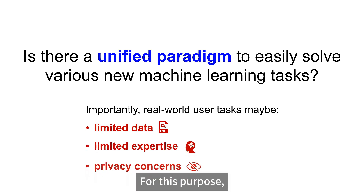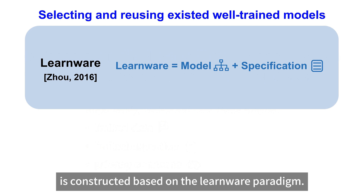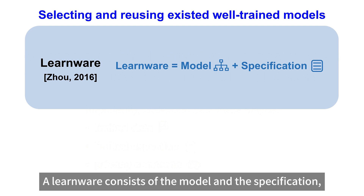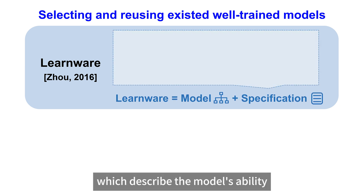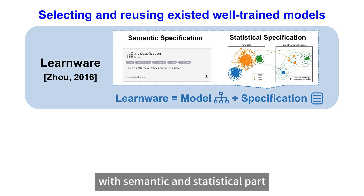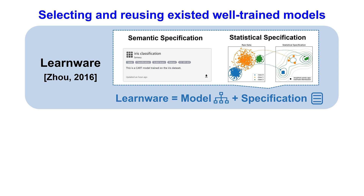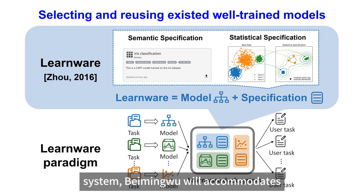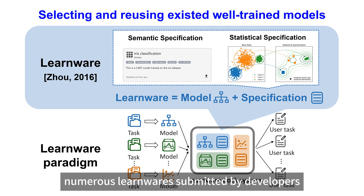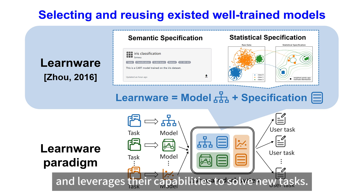For this purpose, the BeemingWu system is constructed based on the Learnware paradigm. A Learnware consists of the model and the specification, which describe the model's ability with semantic and statistical parts without leaking raw data. As the first implementation of the Learnware Dock system, BeemingWu accommodates numerous Learnwares submitted by developers and leverages their capabilities to solve new tasks.